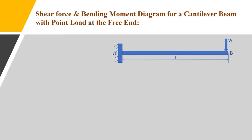A cantilever beam is one where one end is a fixed support and the other end is a free support. Here the fixed end is considered as point A and the free end is considered as point B. The length of the beam between A and B is considered as L.